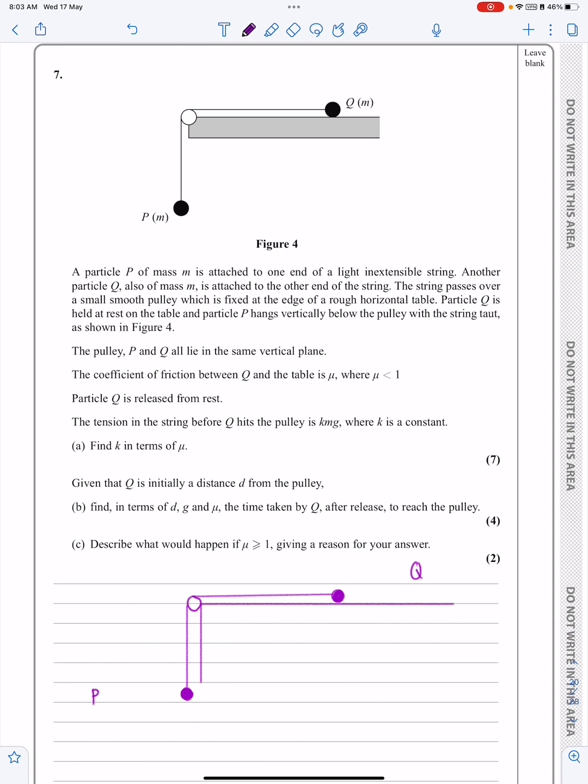So it says we've got a particle P of mass M attached to one end of a light inextensible string. Another particle Q also of mass M is attached to the string, passes over the pulley, fixes a rough horizontal table—that's important. Particles held at rest, P hangs vertically below, and then the usual stuff. Particles P, Q and the pulley all lie in the same vertical plane. Coefficient of friction is mu, okay, I'll put that on in a minute.